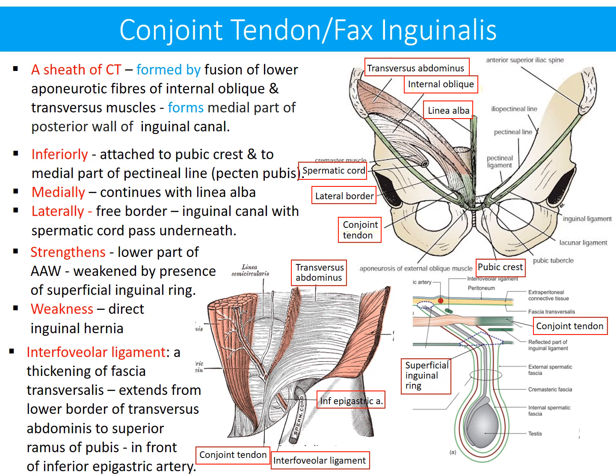A related structure, the interfoveolar ligament, is a thickening of the fascia transversalis which extends from the lower border of the transversus abdominis muscle to the superior ramus of the pubis. At times, this ligament may contain a few muscle fibers from the transversus abdominis muscle.